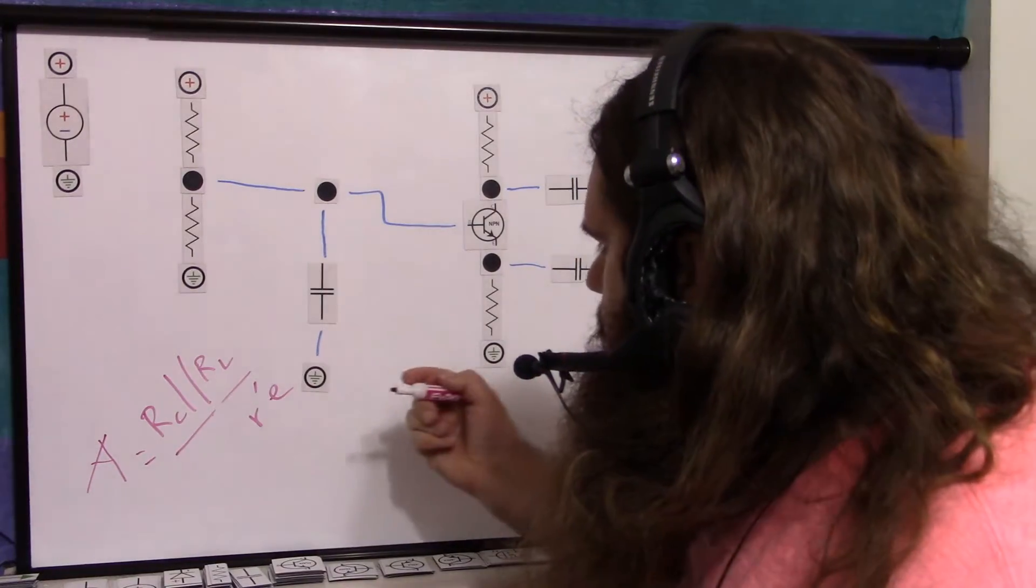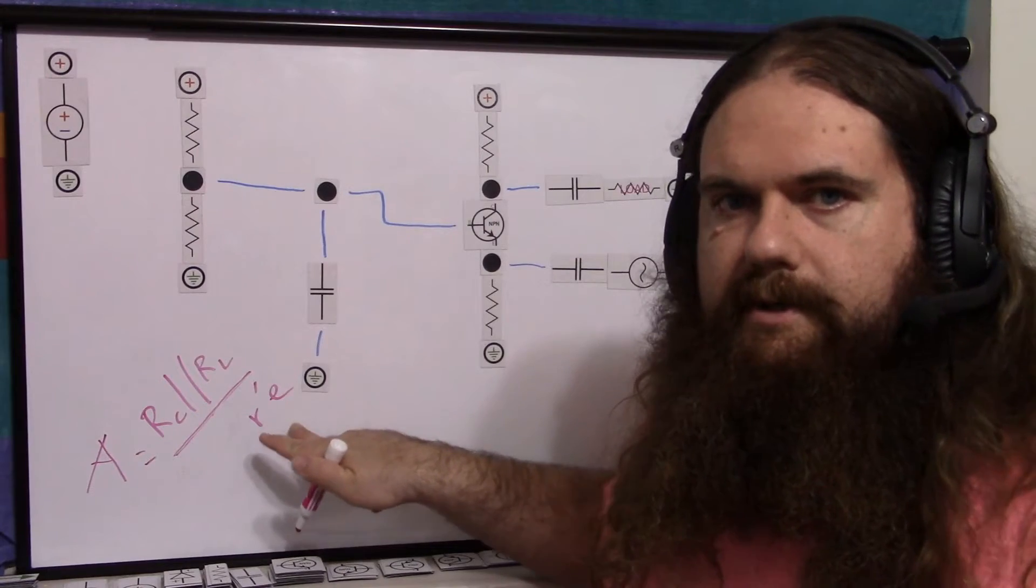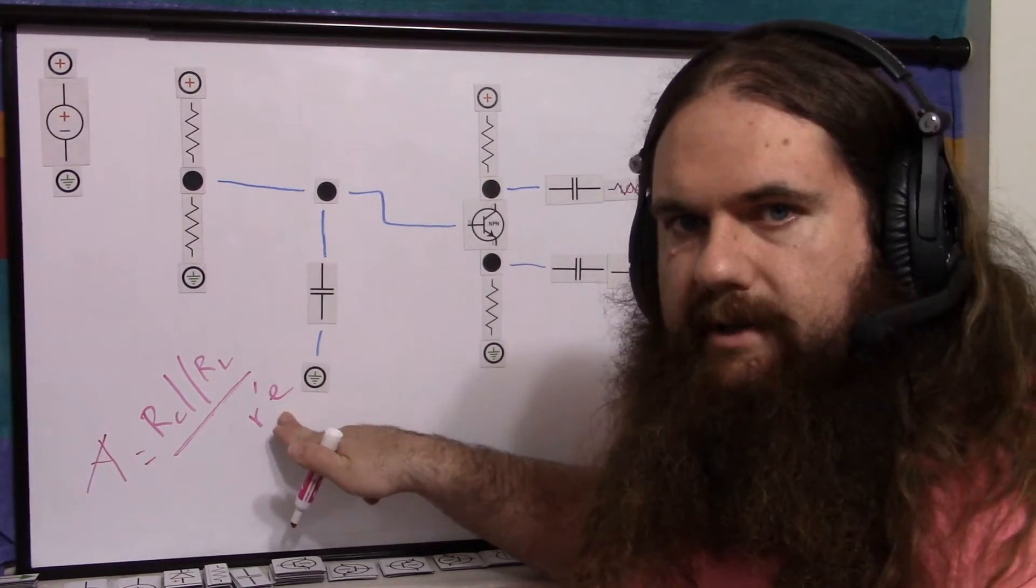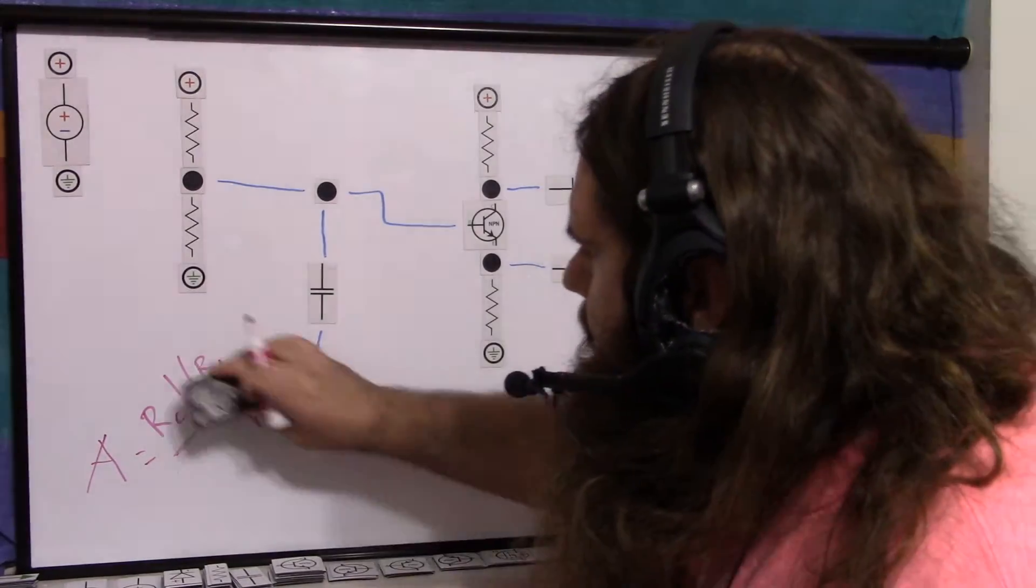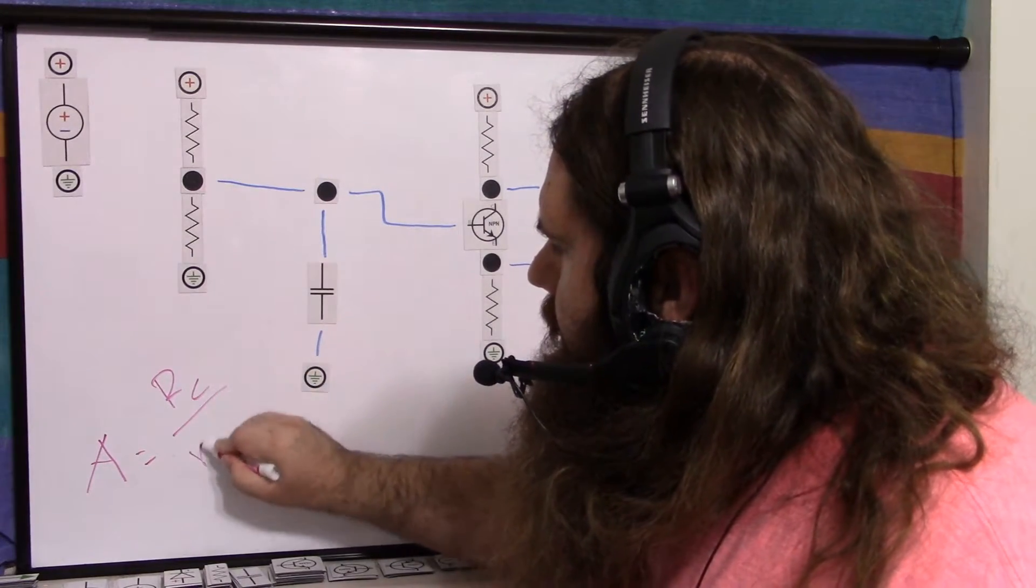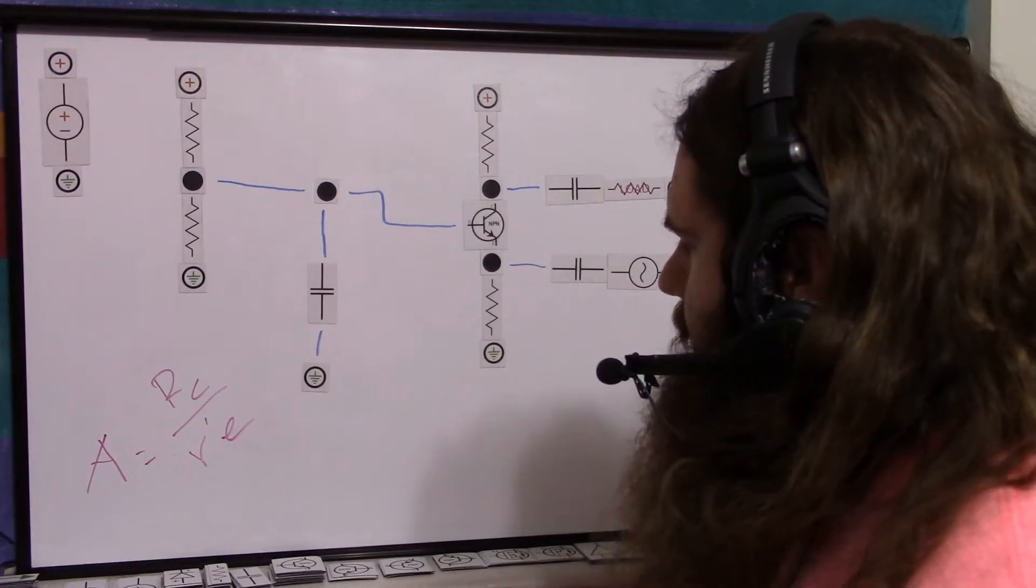is RE doesn't much matter. It does. All of these things that we're getting rid of do matter. But the point is, this matters much, much more. And the illustration here is that you need a small signal. So that's really what this is saying. So a lot of times when I look it up, you'll just see collector resistor over r'e. So this is why a huge voltage gain for a small signal.